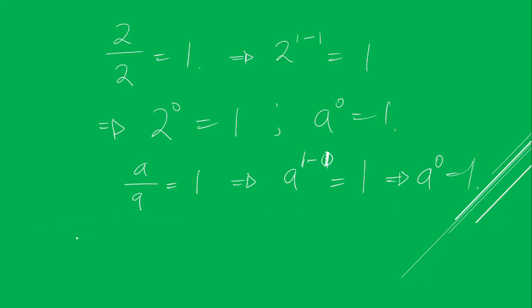So now the problem is 6 to the power of 3x plus 5 is equal to 1. So you now have 6 to the power of 3x plus 5 is equal to 6 to the power of 0, since anything raised to power 0 is 1.